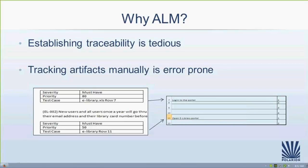With an ALM tool, those linkages are no longer manual. I create the link manually once, but once that happens it is permanent until you delete it. No matter where I move the item, whether I rename it or change it, that link always stays intact. Because of that, it becomes very easy to query those links and automatically build trace tables. Whenever we do demonstrations for customers, this is consistently one of the things they say helps them the most — it saves a lot of time when putting together their audit packages and significantly reduces mistakes in the trace table.